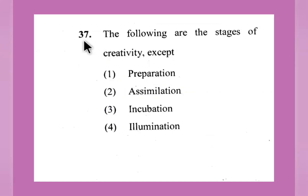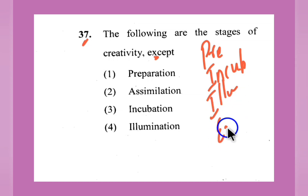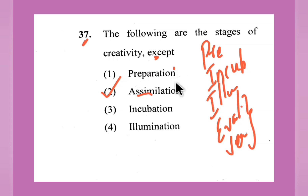Question number 37: The following are stages of creativity — except. There are five steps in creativity: preparation, incubation, elimination, evaluation, and verification. Evaluation and verification can be considered as one step, giving four steps. Preparation, incubation, and elimination are stages of creativity. Assimilation — meaning to fully understand a subject — does not belong to the stages of creativity. Option number 2, assimilation, is the right answer.